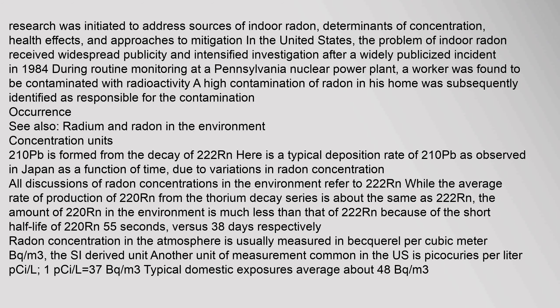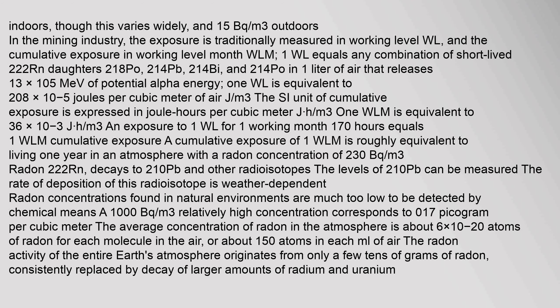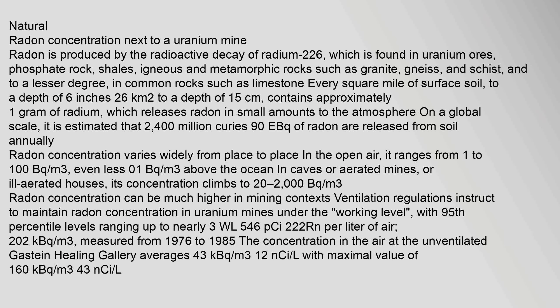Concentration units: 210Pb is formed from the decay of 222Rn. All discussions of radon concentrations in the environment refer to 222Rn. While the average rate of production of 220Rn from the thorium decay series is about the same as 222Rn, the amount of 220Rn in the environment is much less because of its short half-life of 55 seconds versus 3.8 days for 222Rn. Radon concentration in the atmosphere is usually measured in becquerels per cubic meter (Bq/m³), the SI derived unit. Another common unit in the US is picocuries per liter (pCi/L). Radon is produced by the radioactive decay of radium-226, which is found in uranium ores, phosphate rock, shales, and igneous and metamorphic rocks such as granite, gneiss, and schist.